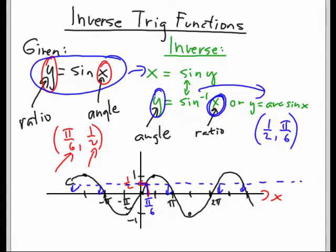Now, because the original sine graph here is not one to one, its inverse is therefore not going to be a function. A given ratio has many angles associated with it. And as we've discussed before, in order to make our function one to one, what we need to do is restrict the domain.